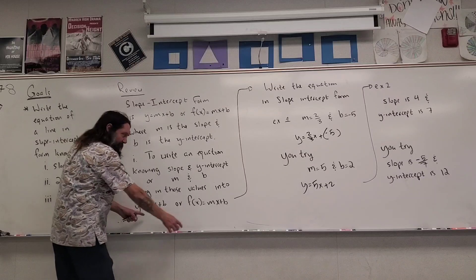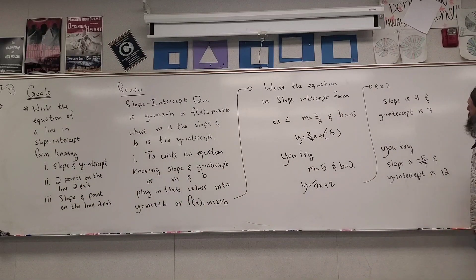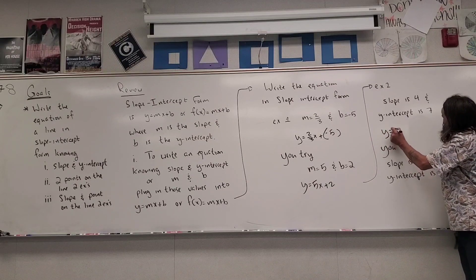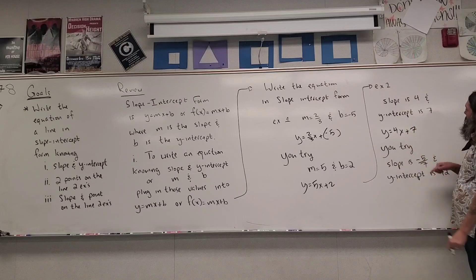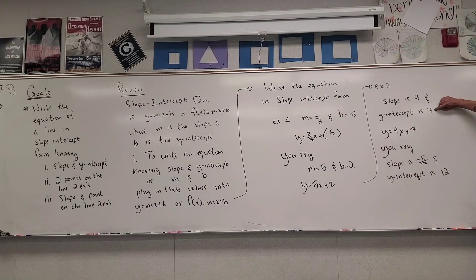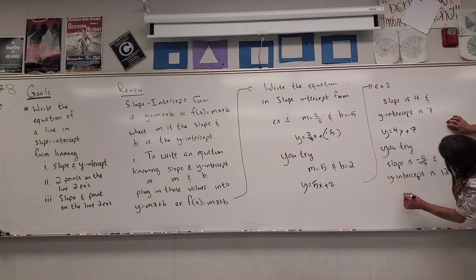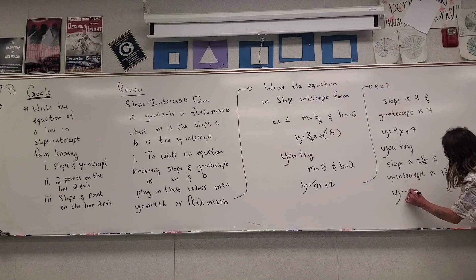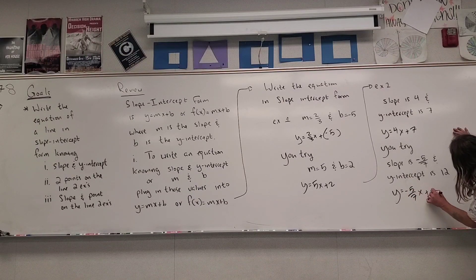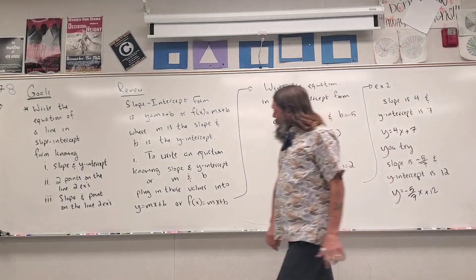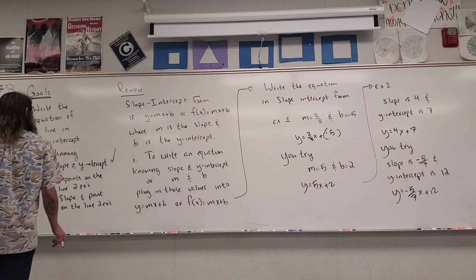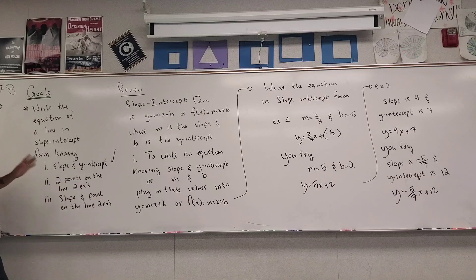In that problem you're given an m and a b — m is slope, b is y-intercept — and we literally plug them in. Example two: slope m = 4 and y-intercept b = 7, so the equation is y = 4x + 7. Hit pause and try your version. Hopefully you tried it — the answer is y = (−5/7)x + 12. That's the easiest of the three versions.